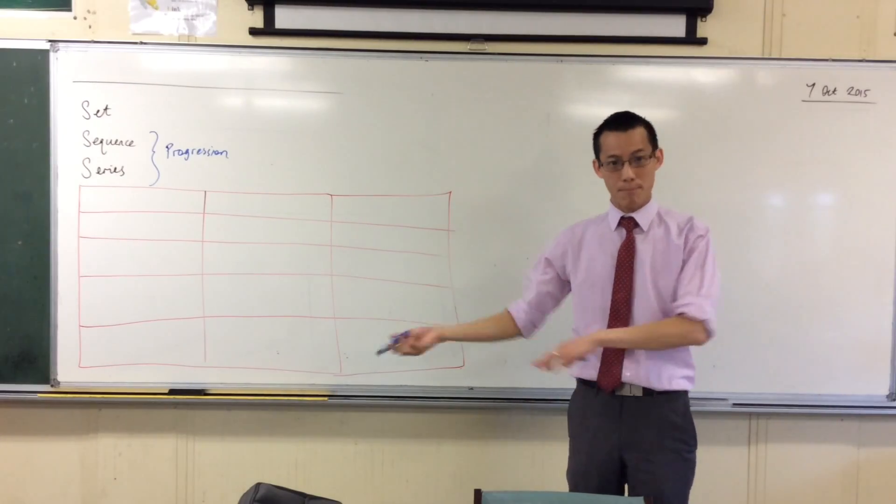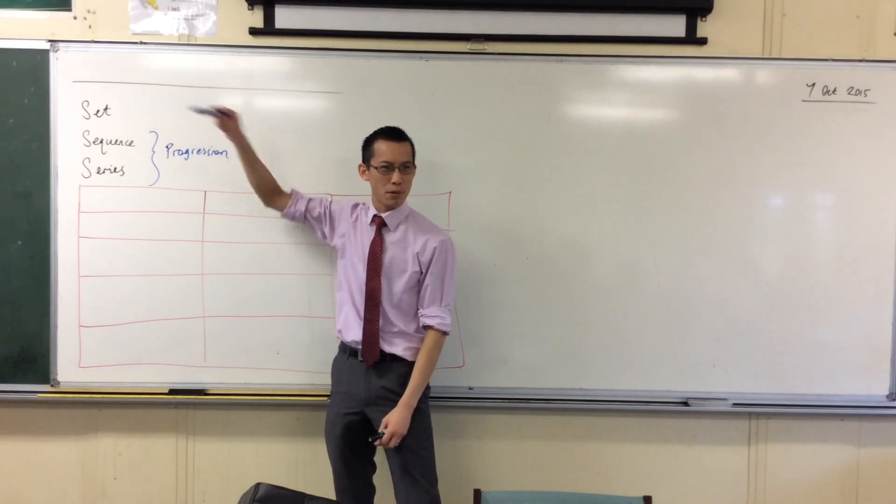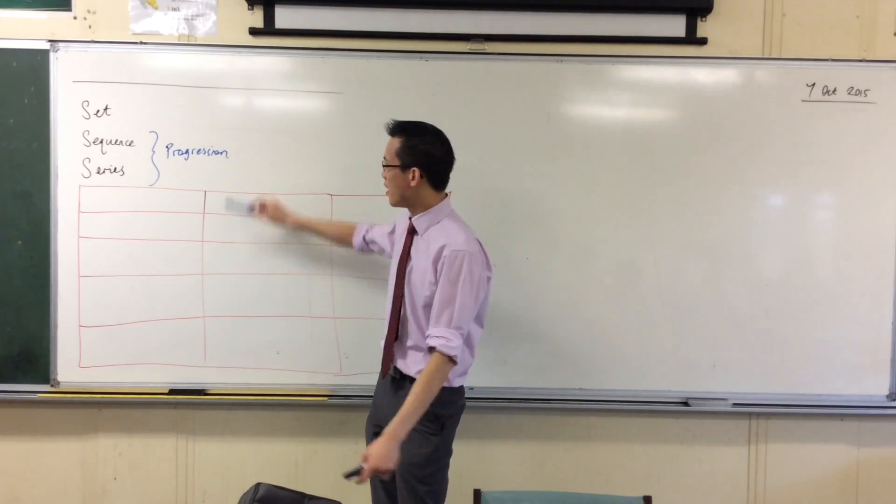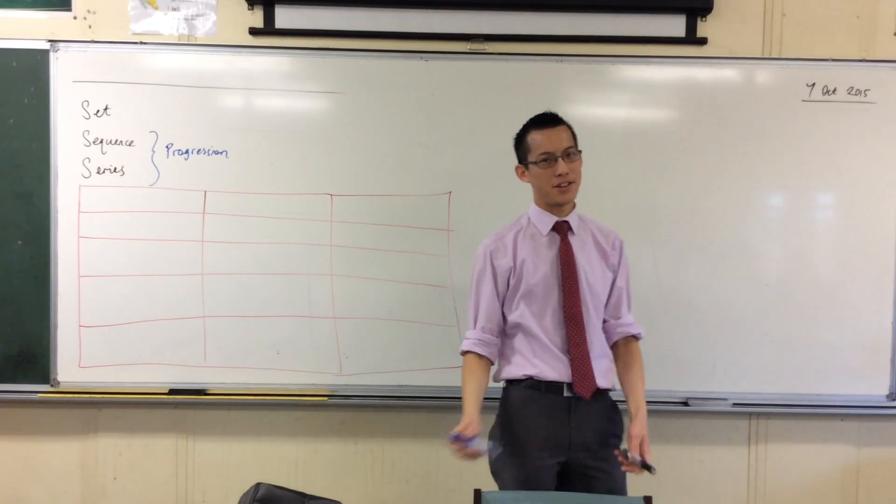You can talk about progressing or regressing, whereas in a set, that doesn't make sense. You don't progress through a set because there's no order implied in there. So you can have a sequence or a series. Both of them are called progressions.